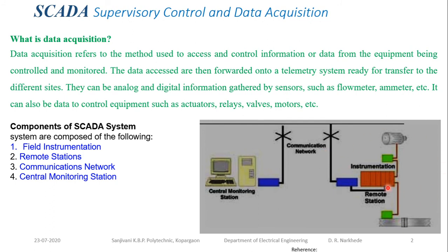You can control your system from any corner of the world — even in space. For example, in missions like Mars missions, the rover on Mars is controlled from an Earth substation. That is an example of a SCADA system. With this, you can start or stop the system from the central monitoring station.